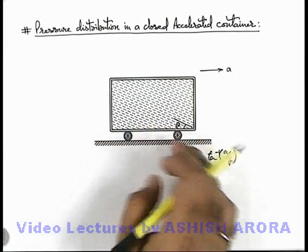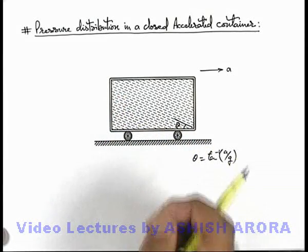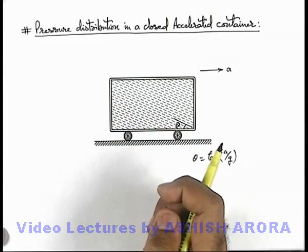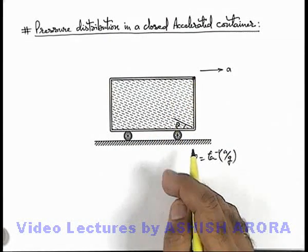Now in such a situation there is no part of fluid which is exposed to atmosphere. So if we wish to find out the least pressure point, it can be taken at the top right corner of the container.